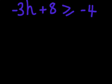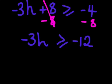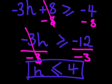For this next one, the first thing I want to get rid of is the constant. So I subtract 8 from both sides — that cancels it out — leaving me with −3h. Do I need to swap the sign? No, because I've only subtracted 8; I haven't multiplied or divided by a negative. The sign stays the same. −4 − 8 gives −12. Now to get h by itself, I divide by −3 — that cancels — and because I divided by a negative, I swap the sign around. −12 ÷ (−3) gives positive 4, so my solution is h ≥ 4.